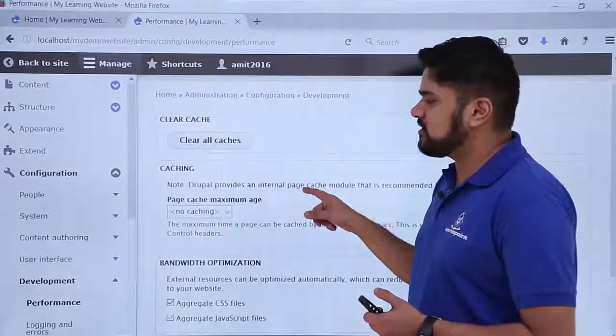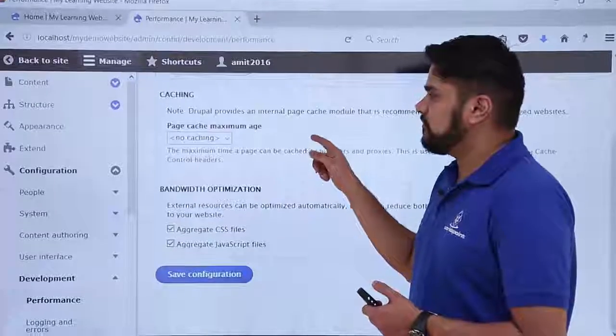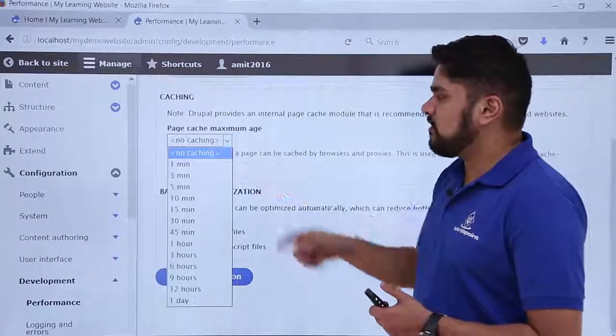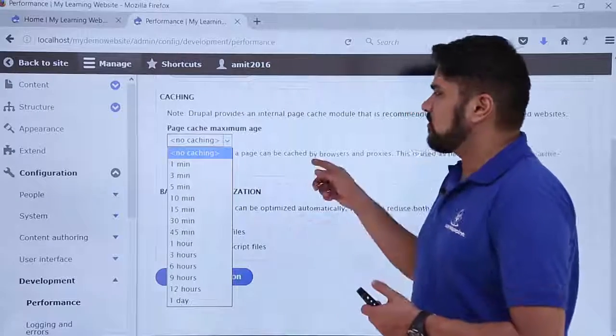So you can click on clear all caches. Here you can set the maximum age of the cache. Keep it as default right now. Here you can see no caching because we aren't setting any minutes here. Keep it as default.